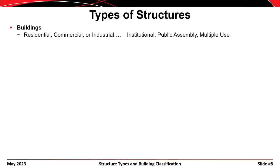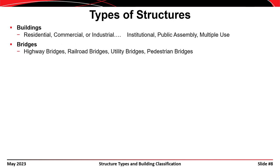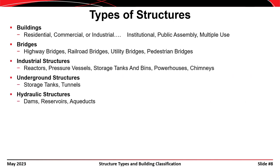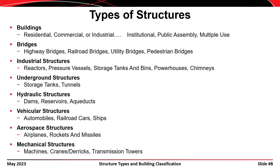A building is a structure designed essentially for residential, commercial, industrial, institutional, or public assembly purposes. Bridges are the most common example of non-building structures, found on highways, railroads, and in parks. Other civil engineering structures include industrial structures, underground structures, and hydraulic structures like weirs and dams. In a broader context, automobiles, railroad cars, airplanes, cranes, and transmission towers are also called structures, but are often designed by mechanical or aerospace engineers.